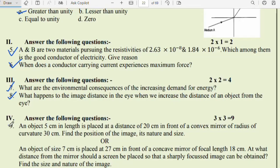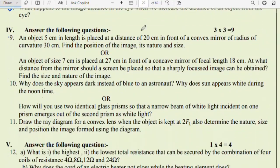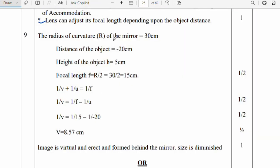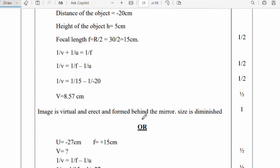Fourth main, answer the following questions. Three marks questions. Question 9: An object 5 cm in length is placed at a distance of 20 cm in front of a convex mirror of radius of curvature 30 cm. Find the position of the image, its nature and size. Radius r = 30 cm, distance of object u = -20 cm, height of object h = 5 cm. Focal length is easy to calculate: f = r/2 = 30/2 = 15 cm. We use the mirror formula: 1/v + 1/u = 1/f. Therefore, 1/v = 1/f - 1/u = 1/15 - 1/-20. Calculating, we get v = 8.57 cm. The image is virtual, erect and formed behind the mirror. Size is diminished.